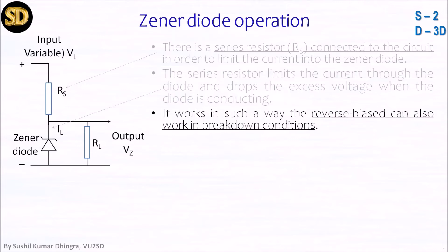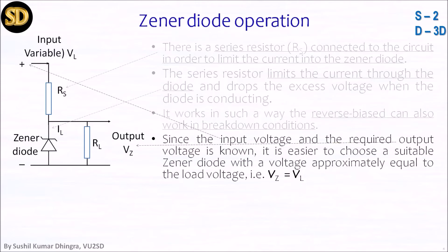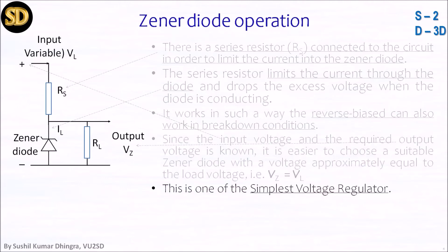It works in such a way that the reverse bias can also work in breakdown condition — it can work in both. Since the input voltage and the required output voltage are known, it is easier to choose a suitable Zener diode rating with a voltage approximately equal to the load voltage shown on RL — the Zener voltage VZ. So we can design it. This is one of the simplest voltage regulators you can understand as an application.